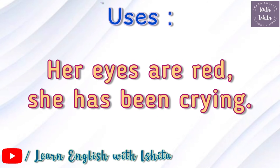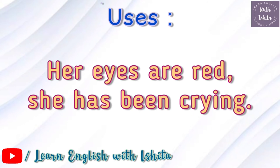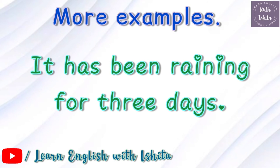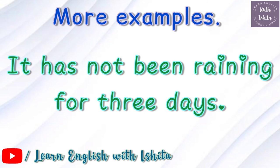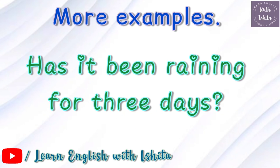The third use is for drawing conclusions. For example, 'Her eyes are red — she has been crying.' Now a quick recap with examples: positive sentence: 'It has been raining for three days.' Negative sentence: 'It has not been raining for three days.' Interrogative sentence: 'Has it been raining for three days?'